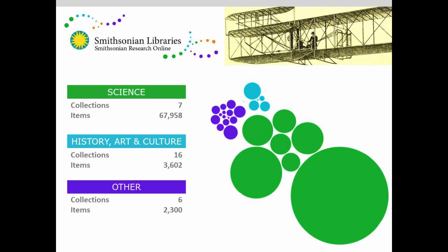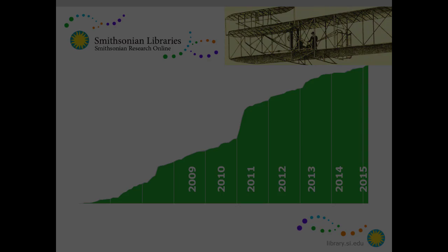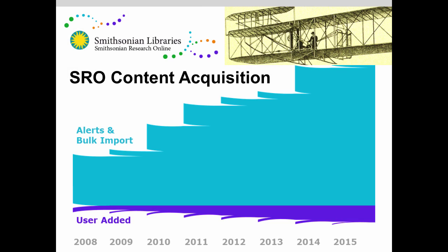This is just another representation of that same information showing that science — which is green in our world — is very large. We started in about 2008 gathering the information for Smithsonian Research Online, and you can see the growth of the content over the years as more of our Smithsonian units came online to participate. The big bump is when we did a retrospective conversion and gathered a whole bunch of early publications. This shows how that content acquisition comes in through alerts.